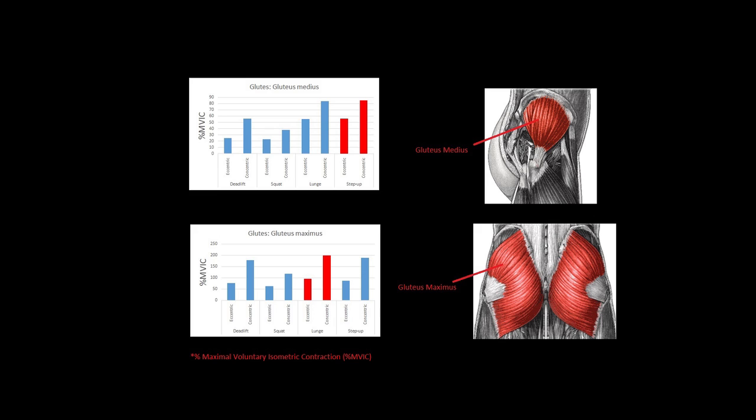For the gluteus maximus, the deadlifts, lunges and step-ups are all significantly better than the squats, with the lunges being the best overall exercise for that muscle.